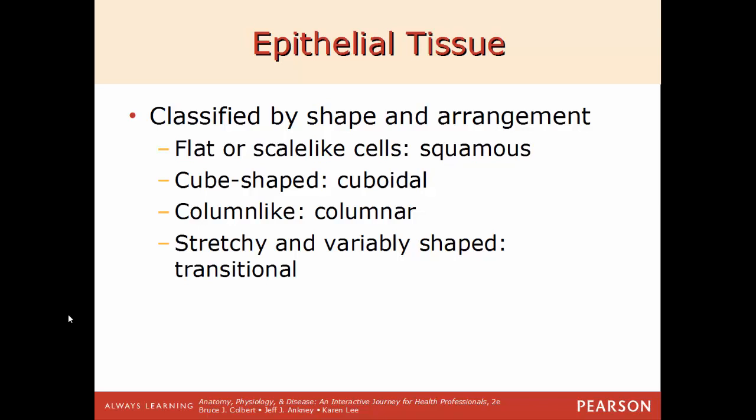When cells are flat and scale-like, they're called squamous — think of a pancake, very flat and squished down. When shaped like a cube, they're cuboidal. When shaped like a column, longer than they are wide, they're columnar. Ones that are very stretchy and can vary their shape greatly are called transitional, and these are only found in the urinary tract — the ureters, urethra, and urinary bladder.